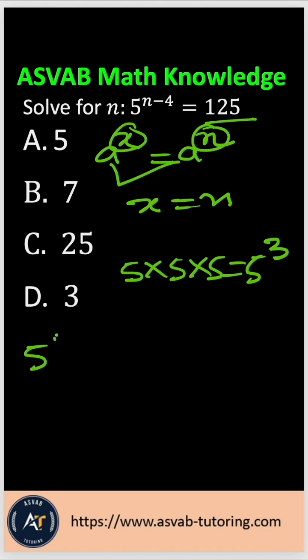5 to the power n minus 4 equals 5 to the third power. So now you could see here, both of the bases are the same. Then you could write n minus 4 equals 3.